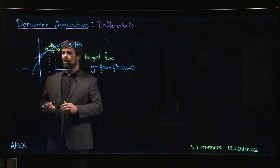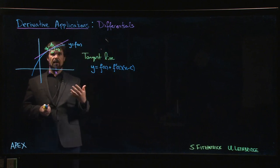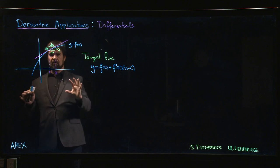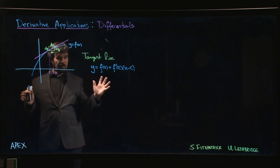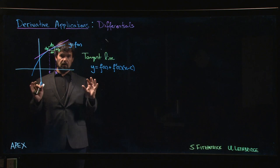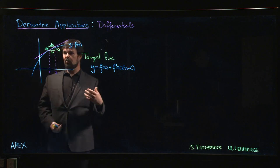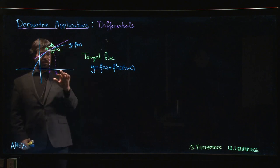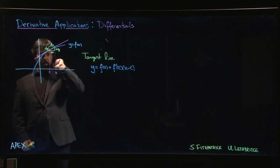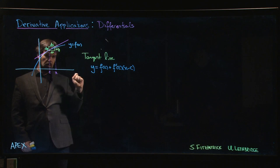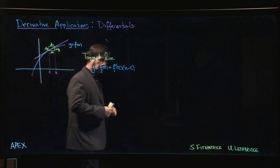One of the things we know about the tangent line is that when we're near x equals c, the tangent line gives us a very good approximation to the original graph. For a given x value, there's not a big difference between the y value on the tangent line and the y value on the original curve.